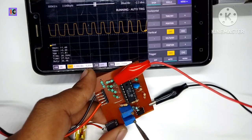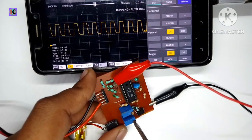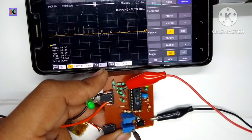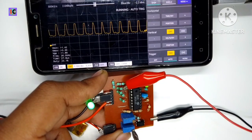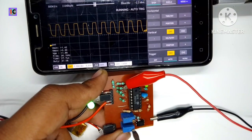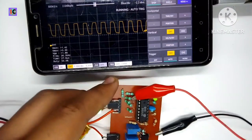You can see the LED brightness is also adjusting as I adjust the duty cycle. This is the TL494-based controller, which can be used for making inverters and DC-DC converters.